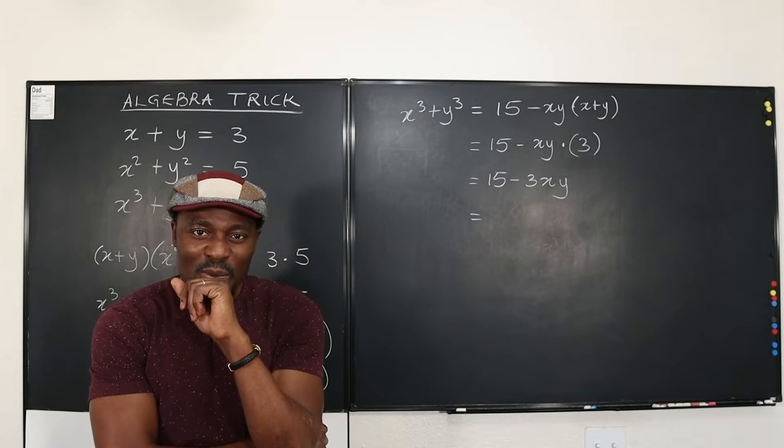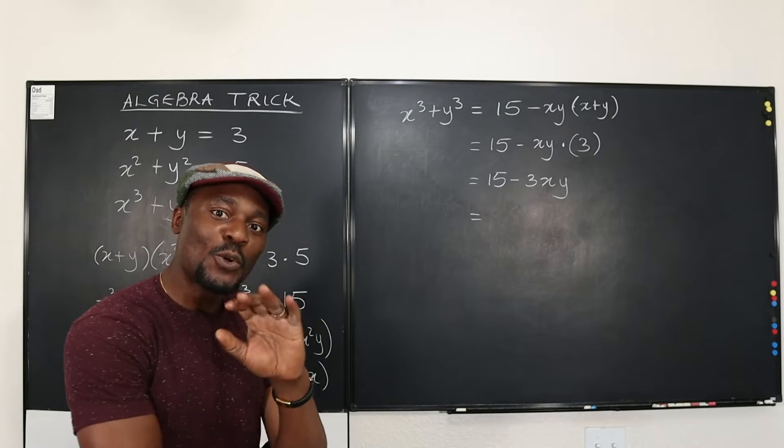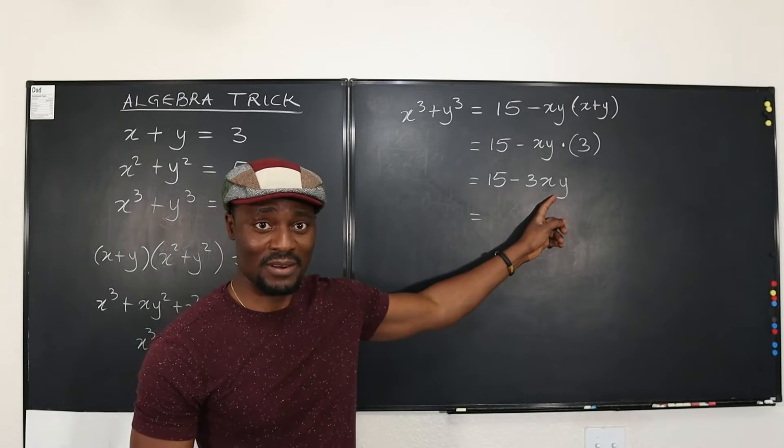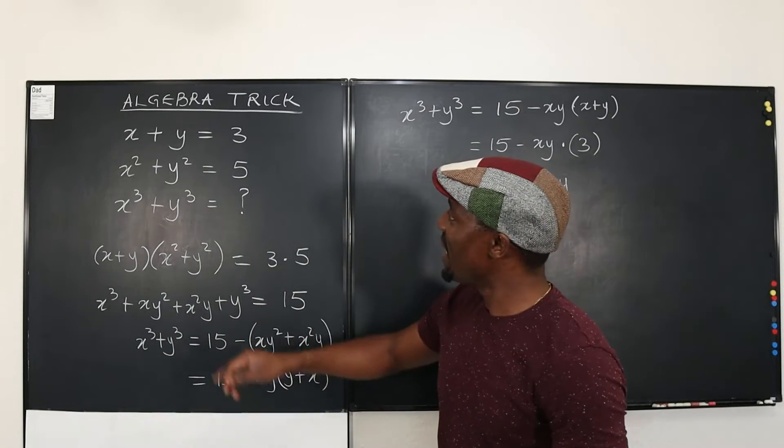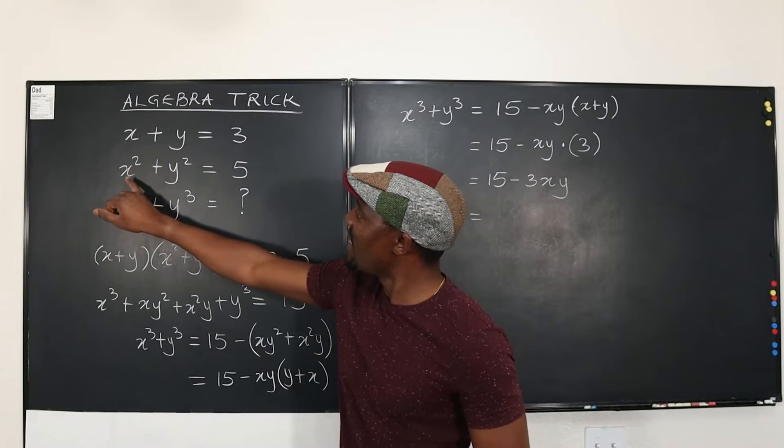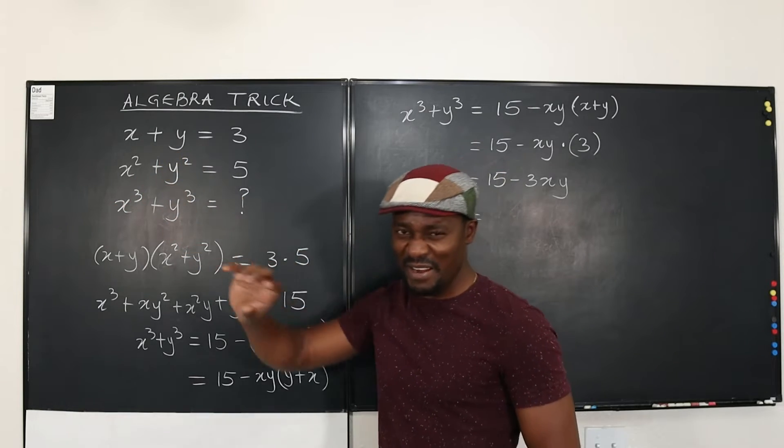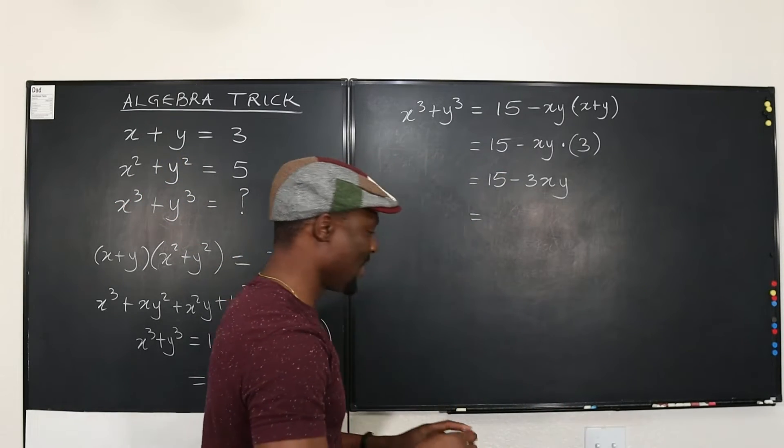So now all I need to know is XY. Ah, what is XY actually? Well, I don't know. So this is what you do. You're almost there. You just don't know what XY is, but we can know what XY is because there's a relationship between X + Y and X² + Y² that involves XY. Remember?